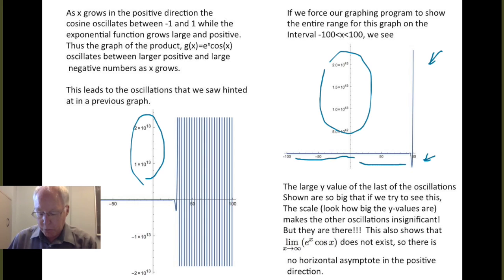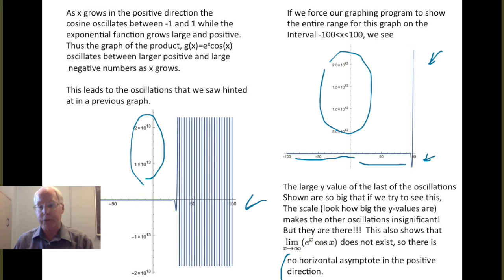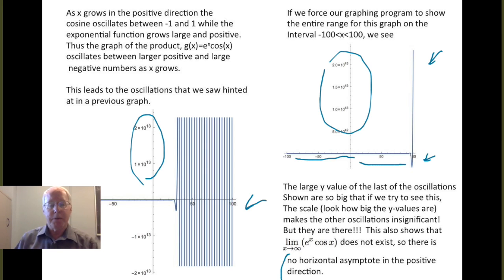With this discussion, we can conclude that because of the oscillations going back and forth — getting larger and larger, some negative, some positive — the limit as x goes to positive infinity of e to the x cosine x does not exist. This tells us there is no horizontal asymptote in the positive direction. We have eliminated vertical asymptotes because the function is continuous for all real numbers, and we now see there is no horizontal asymptote in the positive infinity direction.